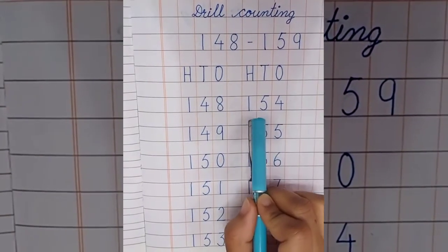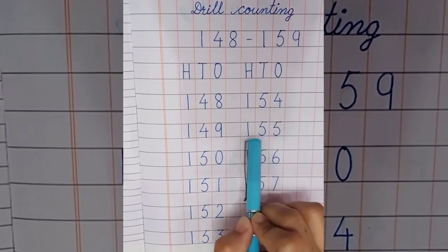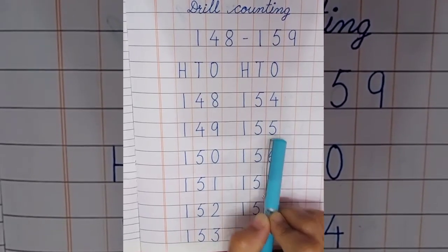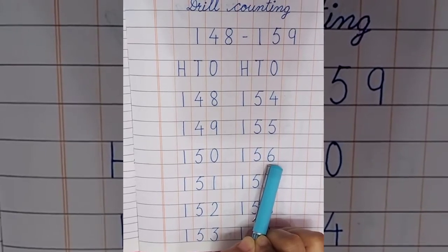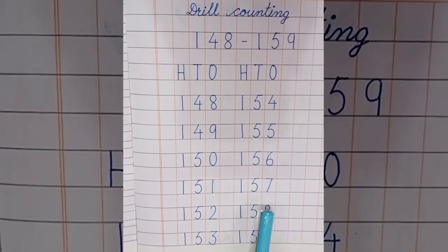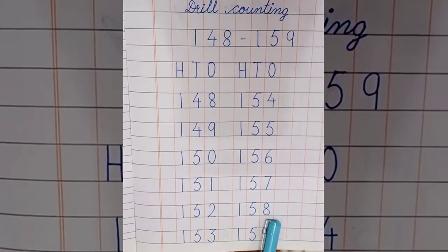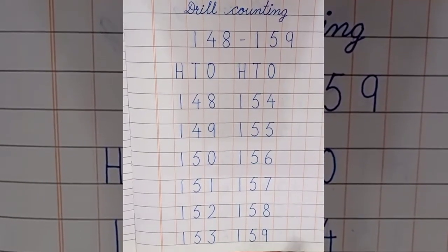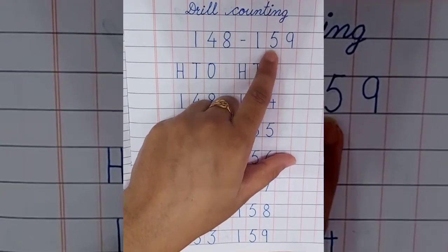Now come to the next line. 154, 155, 156, 157, 158, 159. Here, the last number is 159.